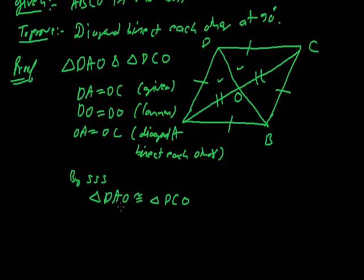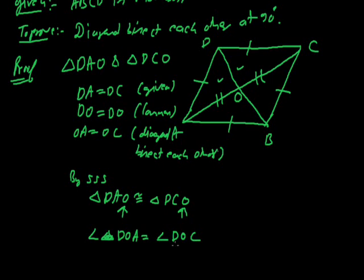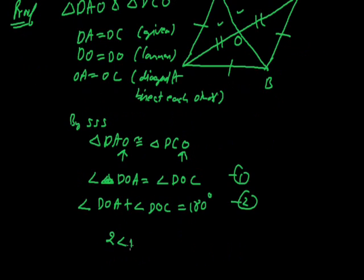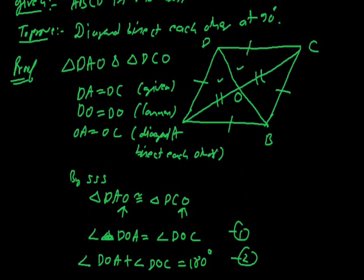From this result we can say angle DOA equals angle DOC by CPCT. Because AC is a straight line, their sum is 180 degrees. So twice of angle DOA equals 180 degrees, which means angle DOA equals 90 degrees. This angle is 90 degrees, and this is how we prove that the diagonals bisect each other at 90 degrees.